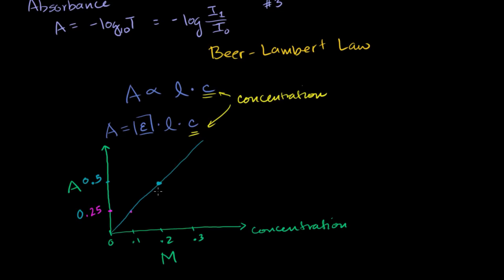Or you could just look at it graphically. You had two known concentrations and figured out their absorbances. You can then go the other way around: for some unknown concentration, you measure its absorbance — let's say it's 0.4 — then go to this line and read off the concentration. It will be pretty close to 0.2 molar, a little bit less than 0.2 molar. And we're going to actually do an example of that in the next video.